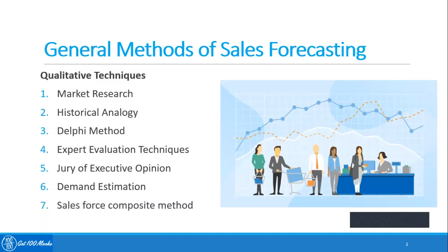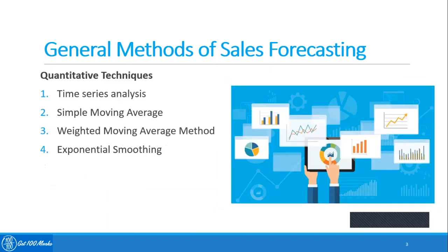The salesforce composite method is a qualitative forecasting method that uses the knowledge and experience of a company's salespeople, sales management, and channel members to produce a sales forecast. The grassroots approach to a salesforce composite accumulates sales forecasts for regions, products, consumers, etc.